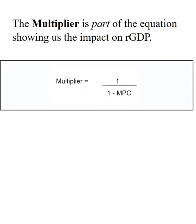We've already seen this equation: 1 divided by (1 minus MPC). That part of the real GDP equation is referred to as the multiplier. It's important to remember that it's the multiplier times the spending, but it's also important to know what the multiplier is by itself, because sometimes that's the question — just solve for the multiplier. So we need to know what part of the equation it's referring to.